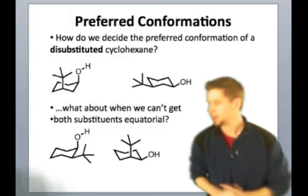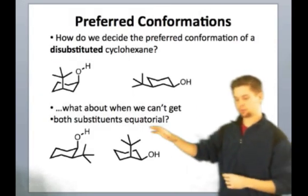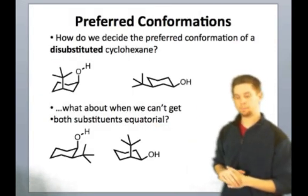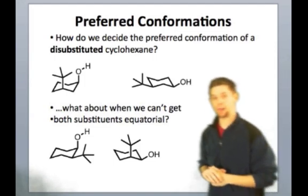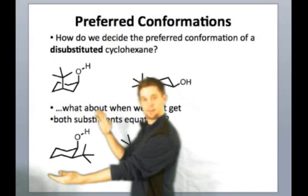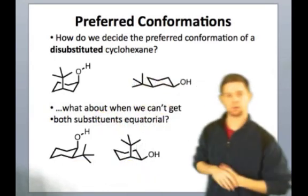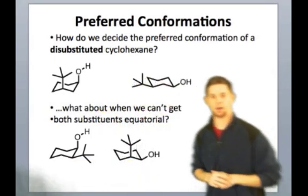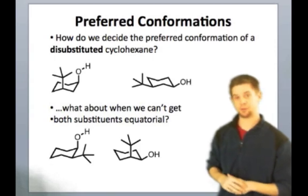And that's why when deciding between these two conformers, we would choose the one that puts the tert-butyl group equatorial as the most stable conformer. So it would be this one right here. That conformer right there would be the most stable of the two because it puts that tert-butyl group equatorial.